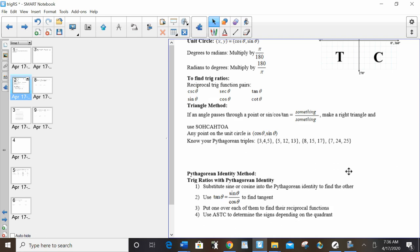And then your final step, which is the same for triangle method, is to use your ASTC to determine the signs. So make sure you understand that applies for both. I probably should have had it in here, but make sure you're always checking your signs at the end.